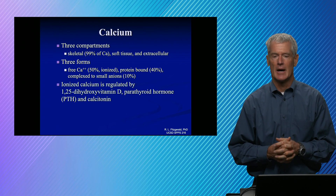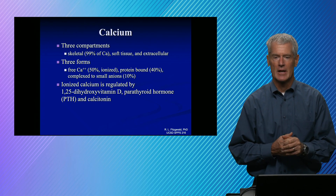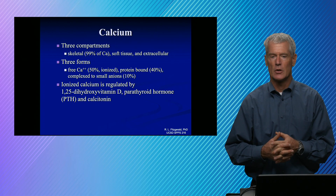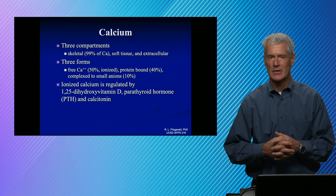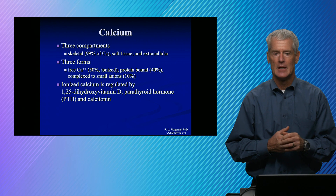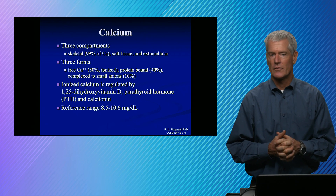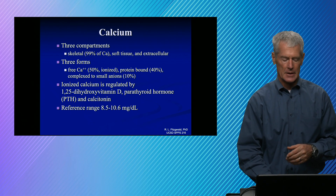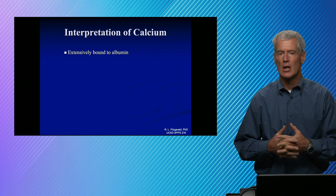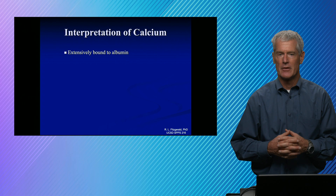Ionized calcium is regulated by three different components — some people say a vitamin and two hormones, but you might look at them all as three hormones because 1,25-dihydroxyvitamin D is a steroid and could be considered a hormone. 1,25-dihydroxyvitamin D and PTH are going to increase calcium. Your parathyroid has receptors; if your ionized calcium is low, they sense that and release PTH. PTH works together with 1,25-dihydroxyvitamin D to increase calcium. Calcitonin generally lowers calcium concentrations. The reference range is fairly tightly regulated between 8.5 and 10.5. If you really want to know your ionized calcium, it's probably best to measure that directly.